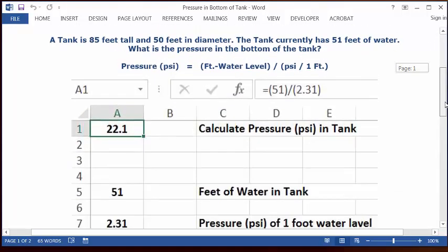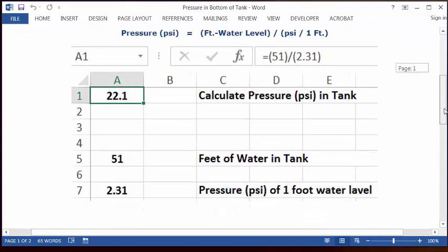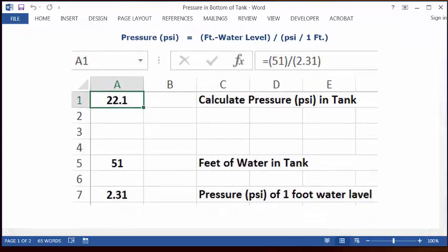So let's see how we're going to put this in an Excel spreadsheet. You can open up a blank spreadsheet, put your cursor in C1 and type calculate pressure psi in tank. And you can put your cursor in A1 and format it as whole numbers with one decimal, set it as bold and centered.